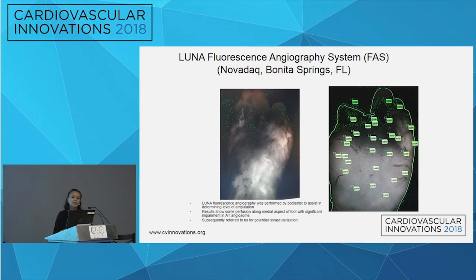The podiatrist performed something called fluorescence angiography, which I'll go into detail on later in the presentation. She did it to assist in determining the level of amputation. The areas of white show perfusion — she saw there was some perfusion in the foot, though obviously some areas lacked significant perfusion. At that point, she decided to refer us for potential revascularization.